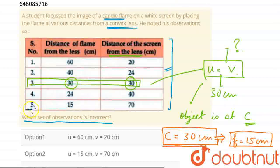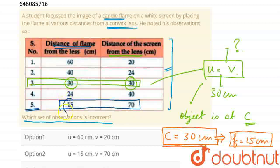But the 5th observation, what is the 5th observation? The object, the flame, is at 15 cm, but the image is at 70 cm. Now this one is not possible.